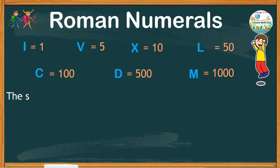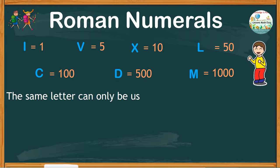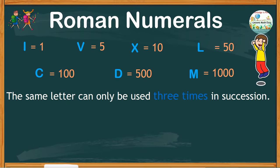There are some points to consider when reading and writing Roman numerals. Take note that the same letter can only be used three times in succession and their values are added. I repeat, only three times in a row. For example, I is for 1, so you can use it three times to express number 3.